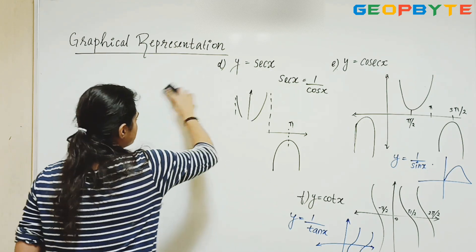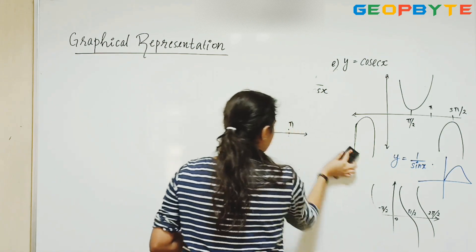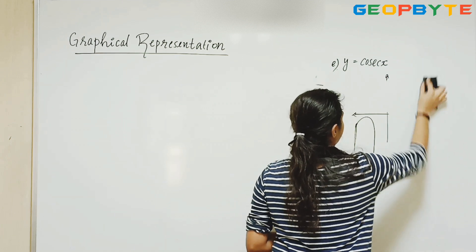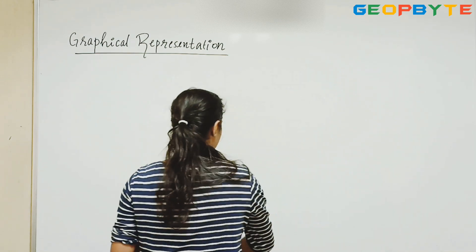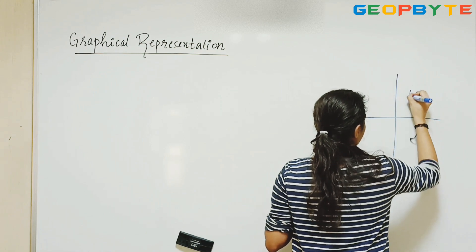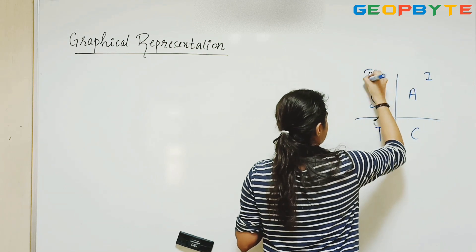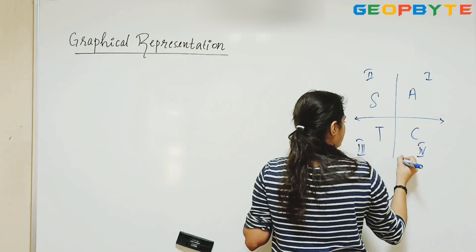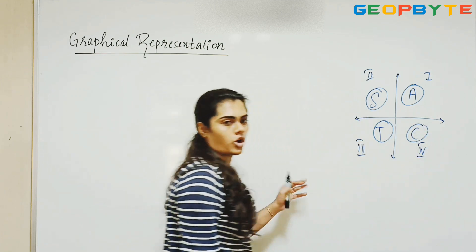Now we will solve one problem. From the last class, I told you how the sign of each function differs in different quadrants — let me write that again, as we need it to solve the problem. We always have to take care of the sign. This is the first quadrant, second quadrant, third quadrant, and fourth quadrant. We always have to take care of the sign according to the quadrant.